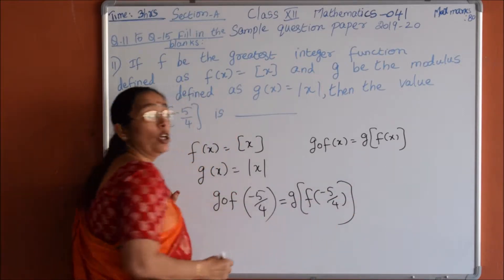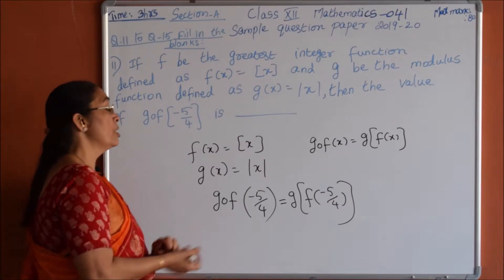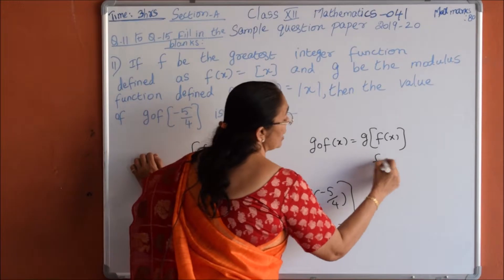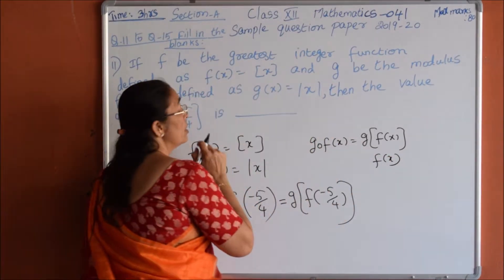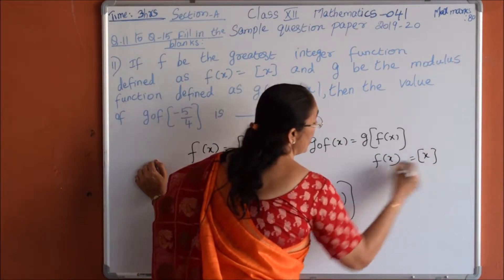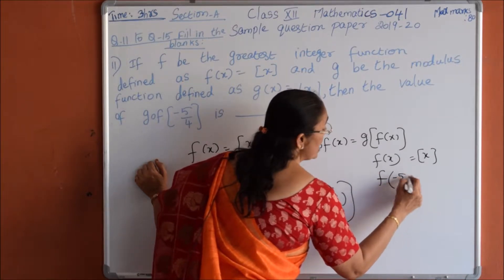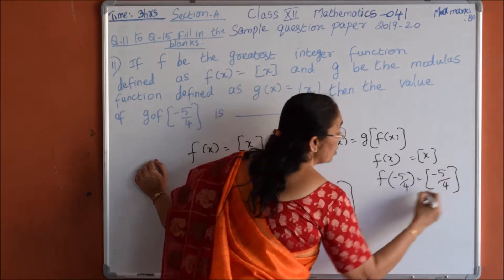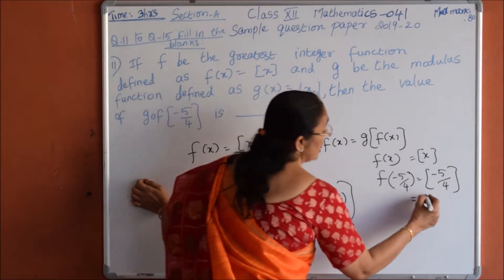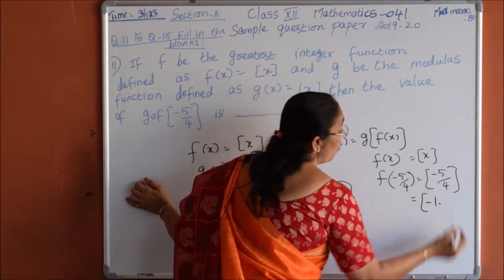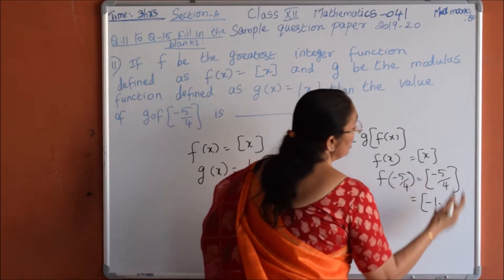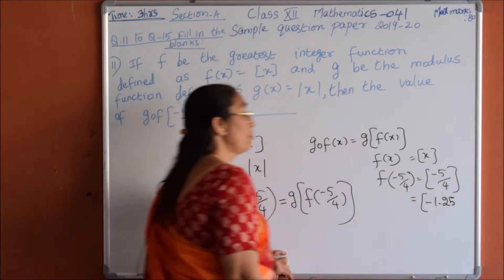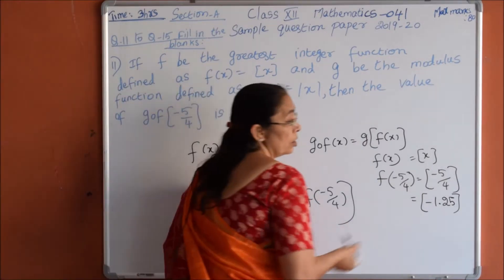First we find f of minus 5 by 4, then we apply the g function. Since f(x) = step(x), f(-5/4) = step(-5/4). Now minus 5 by 4 on simplification gives us minus 1.25.